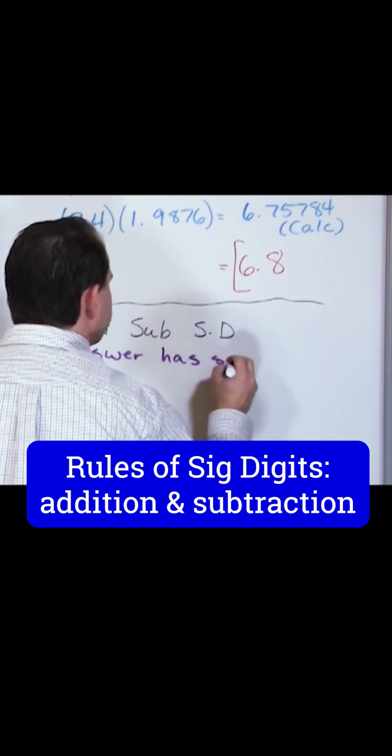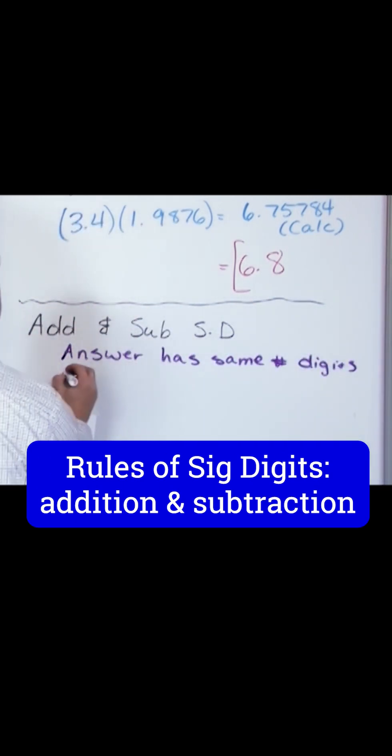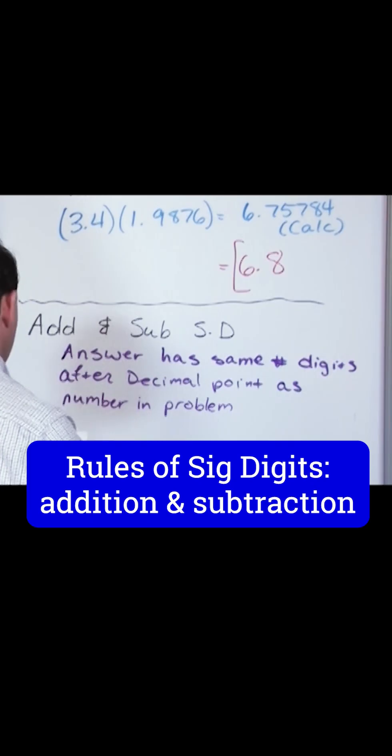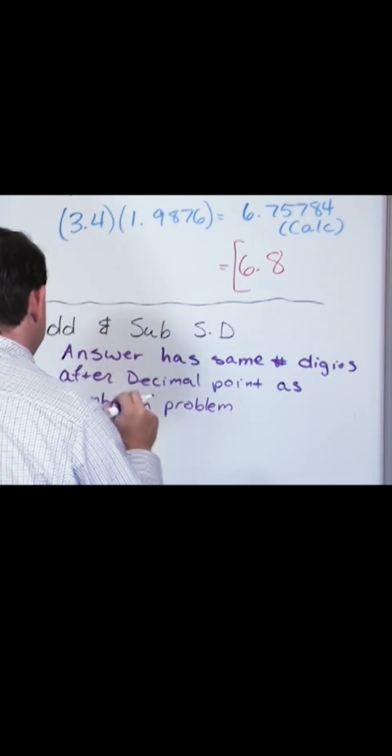The answer has the same number of digits after the decimal point as the number in the problem with the least number of digits after the decimal.